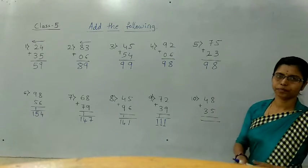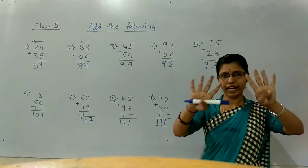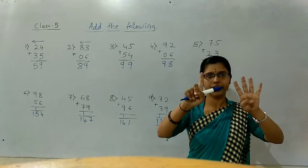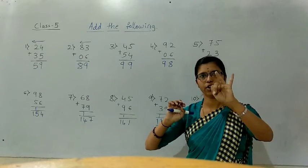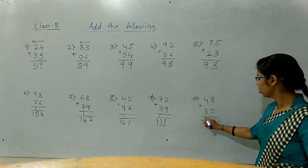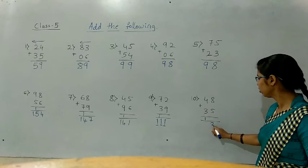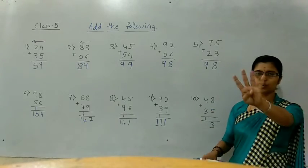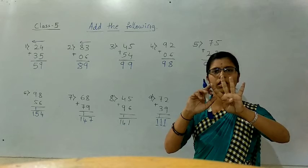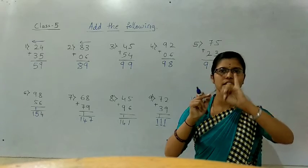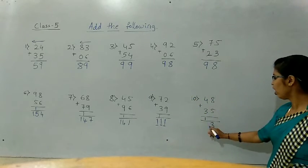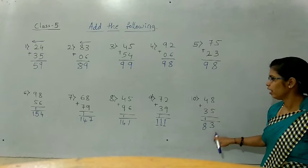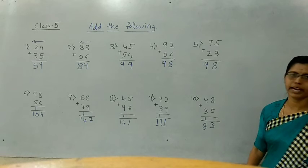8 plus 5 — hold 8 fingers. After 5: six, seven, eight, nine, ten, eleven, twelve, thirteen. How much? 13. Then 4 plus 3 — hold 4 fingers. After 3: four, five, six, seven. 7 plus carry 1 equals 8. So 48 plus 35 equals 83.